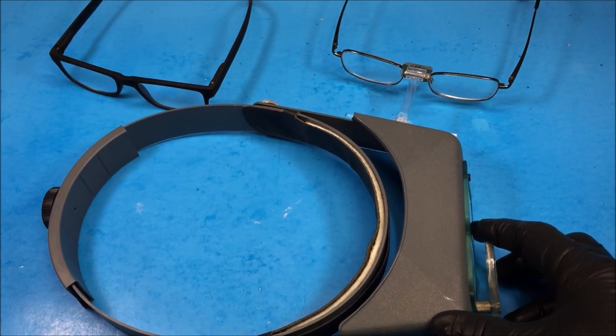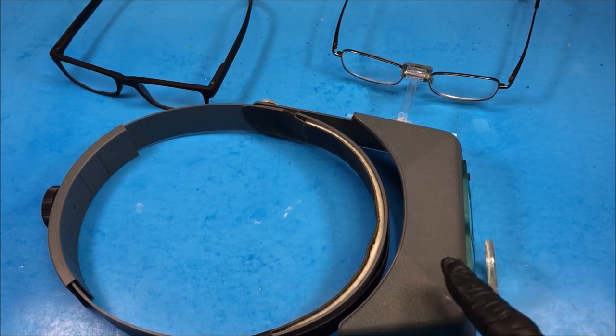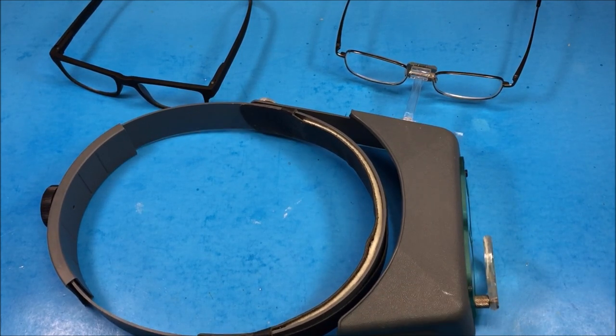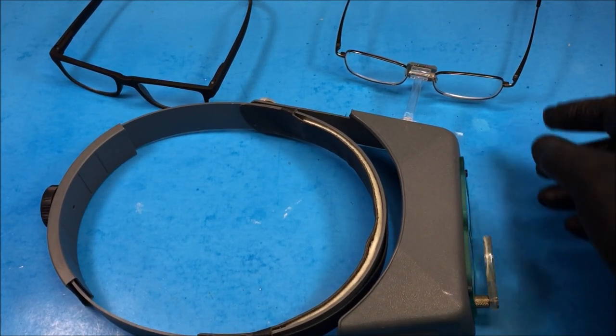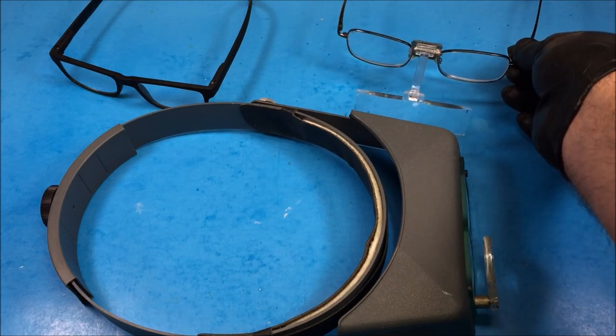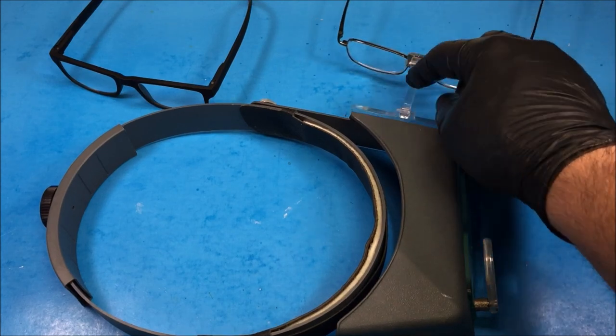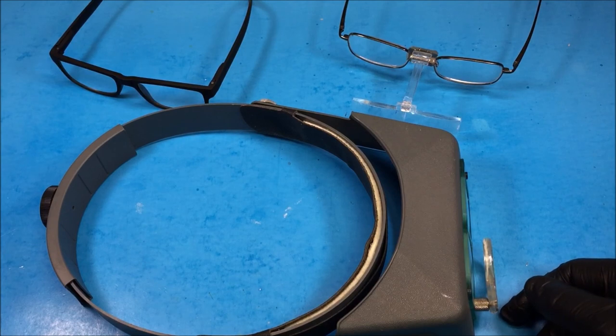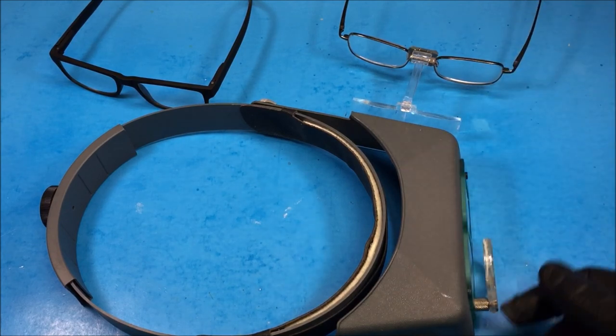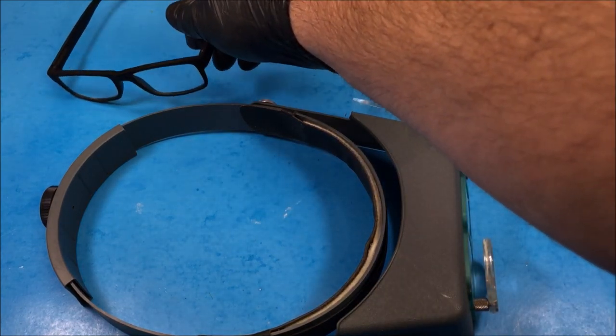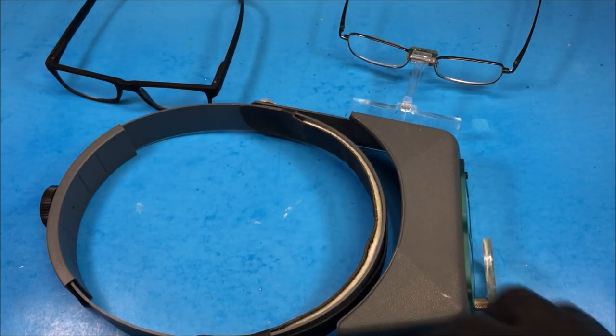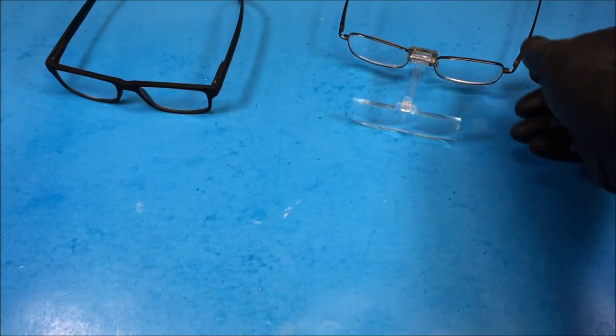Okay so as you can see I've got three different types here I've used in the past. This is actually a set of Optivisors, the brand Optivisor. A prescription pair of glasses with an arm I purchased from my dentist, which actually is really good but it was quite expensive. And then just your standard pair of reading glasses. So why don't we take a look at the reading glasses first.